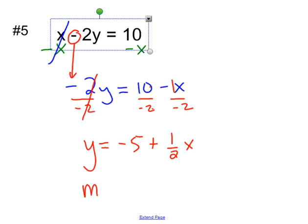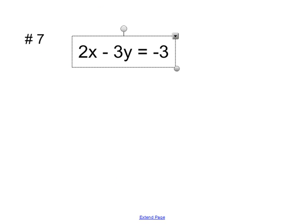And so now my slope is always the number in front of x, which you can see is a positive 1 half. You've got to be very diligent with your signs here. All right, let's do one more of these, and then we'll look at a graphing one. So I have number 7.